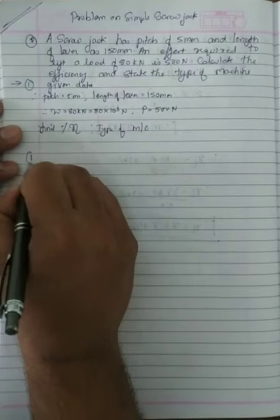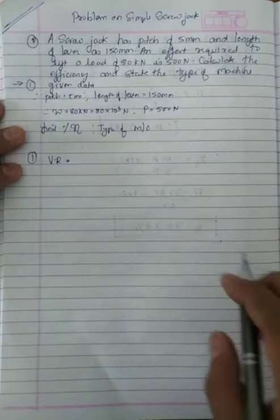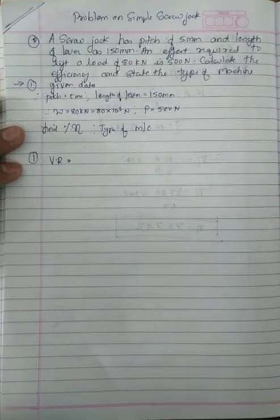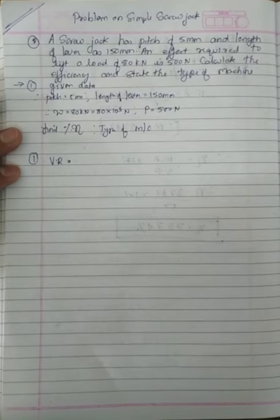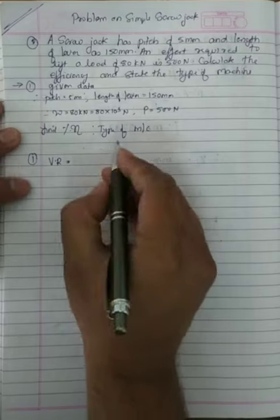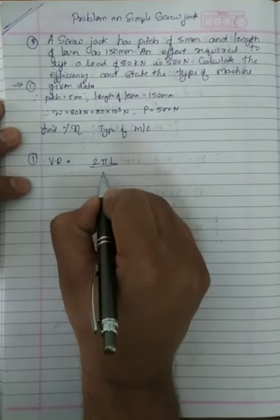So first of all we need to calculate velocity ratio. The formula for velocity ratio is 2πL upon P, where L is length of lever and P is pitch.